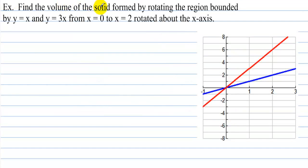Example: find the volume of the solid formed by rotating the region bounded by y equals x and y equals 3x from x equals 0 to x equals 2, rotated about the x-axis. Here we have the line y equals x and here we have the line y equals 3x. They both have a y-intercept of 0; one has a slope of 1 over 1 and the other a slope of 3 over 1.